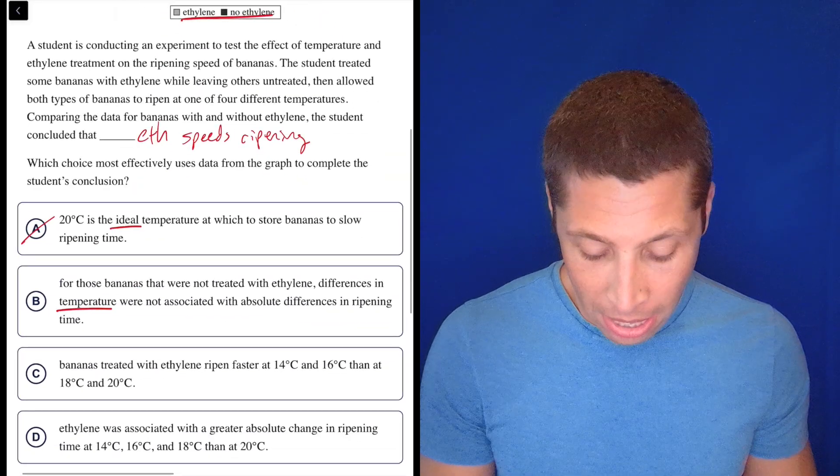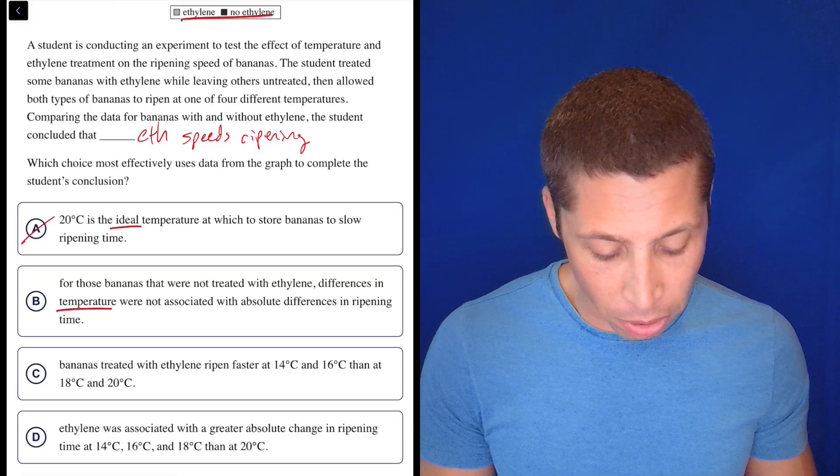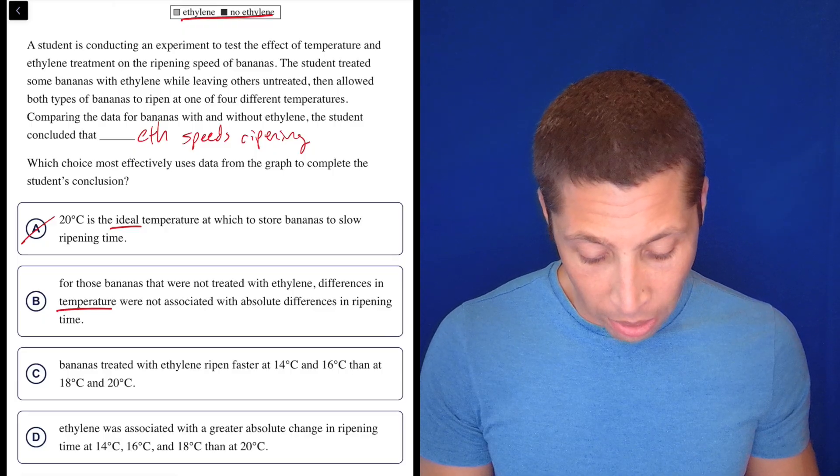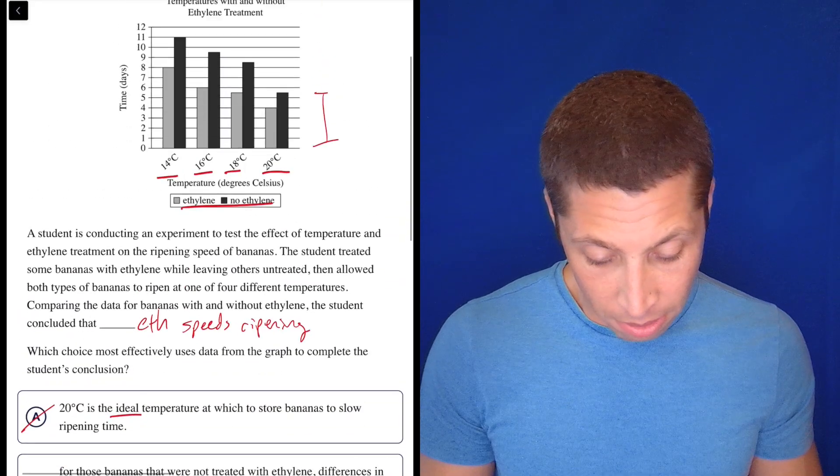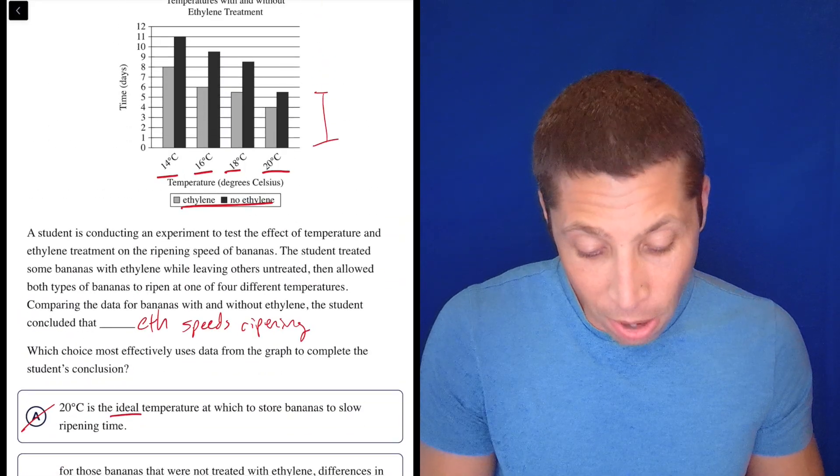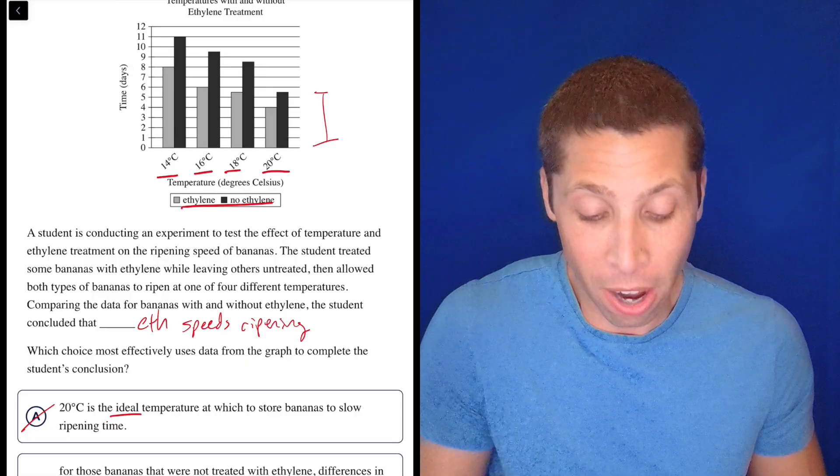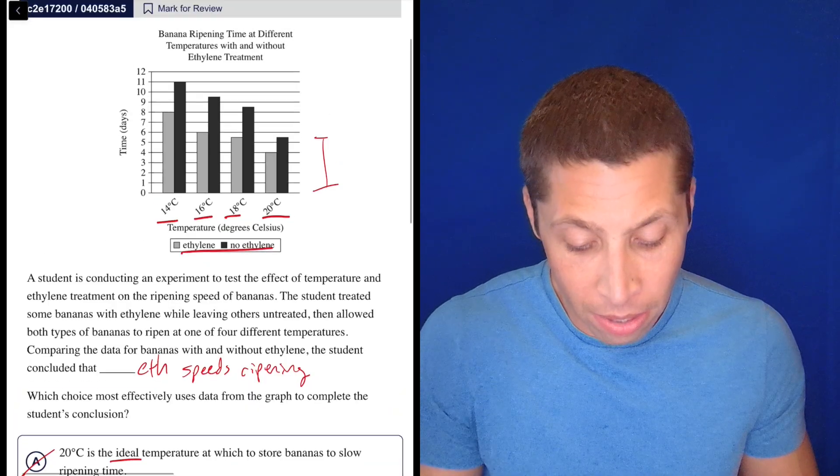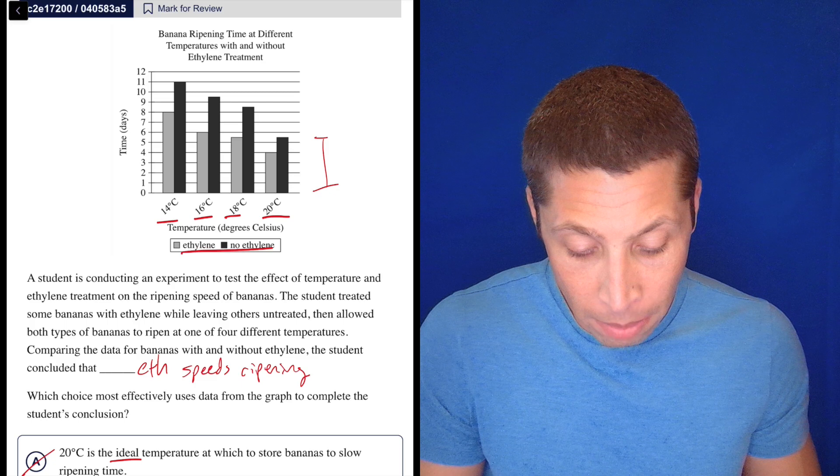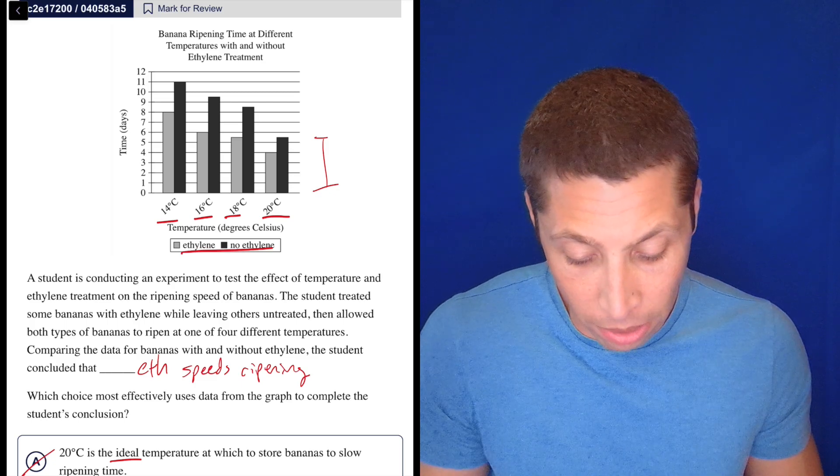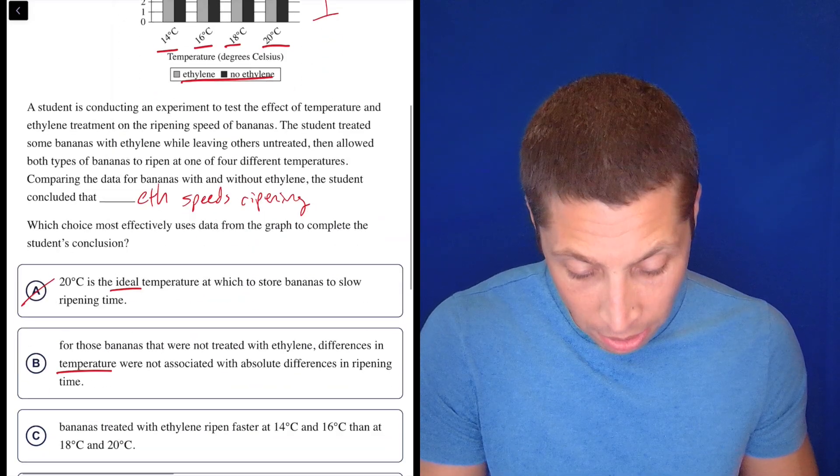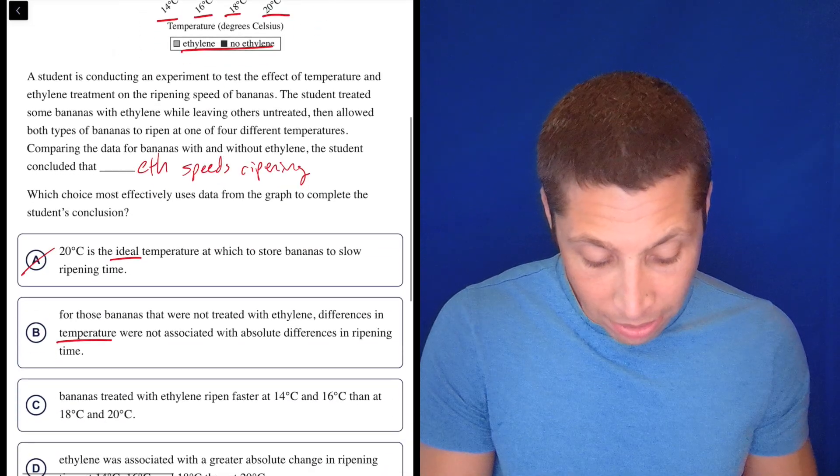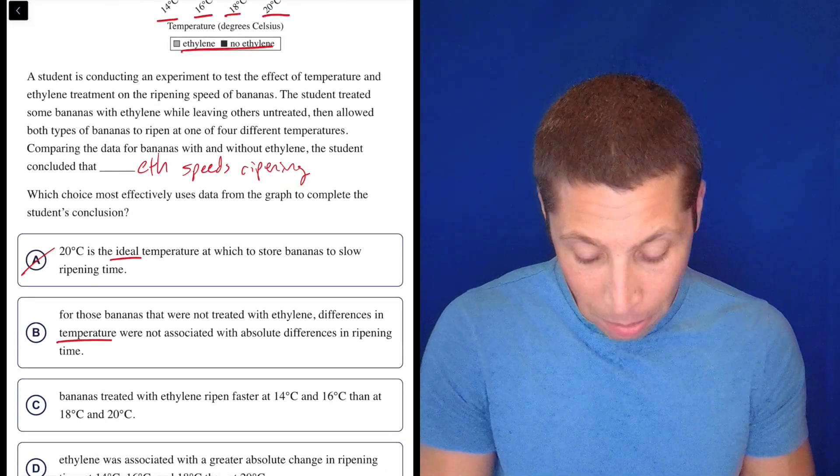It seems like this is saying that temperature does not matter, but it clearly does. These are different sizes, these rectangles. So I don't know. Let's go to C. Bananas treated with ethylene ripen faster at 14 and 16 degrees than at 18 and 20. Okay, with ethylene, that's the gray bars at 14 and 16. No, they're slower at 14 and 16 because those gray bars are higher, right? That means there's more time going by. Am I missing something here? Banana ripening time at different temperatures. No, that eight days is longer than whatever 18 is, five and a half days, right? So they don't ripen faster, they ripen slower.